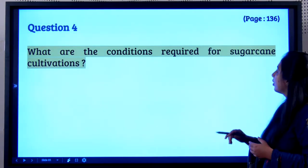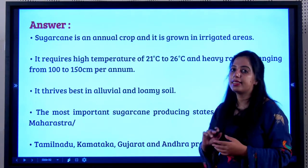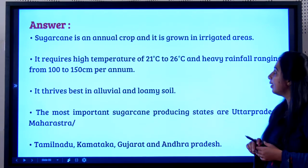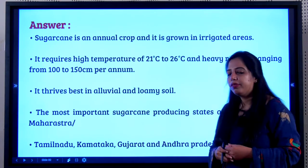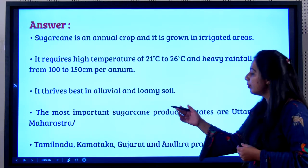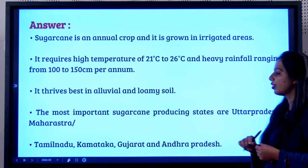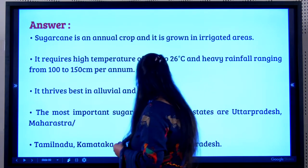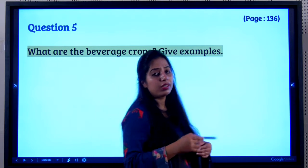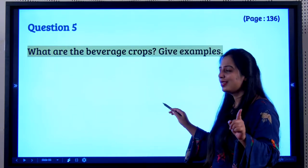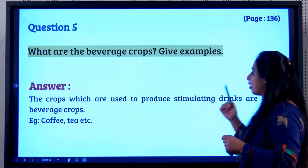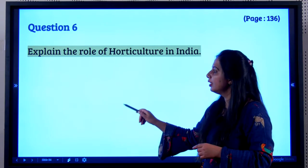Conditions required for sugarcane cultivation: it is an annual crop requiring high temperature of 21 to 26 degrees Celsius and heavy rainfall of 100 to 150 cm per annum. It thrives best in alluvial and loamy soil. The most important producing states are Uttar Pradesh, Maharashtra, Tamil Nadu, Karnataka, Gujarat, and Andhra Pradesh. Beverage crops are crops used to produce stimulating drinks — examples are tea and coffee.